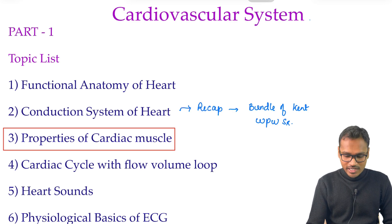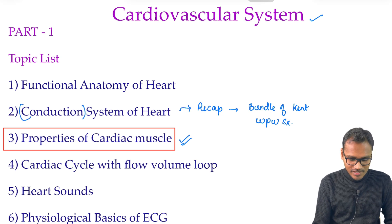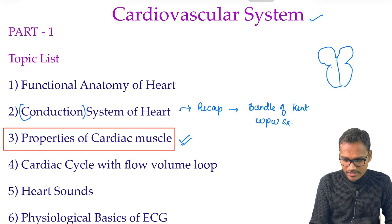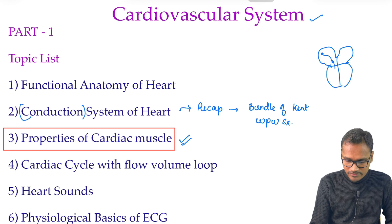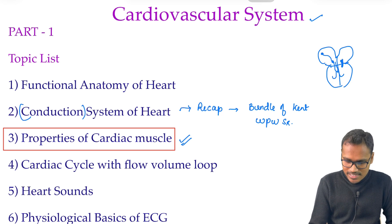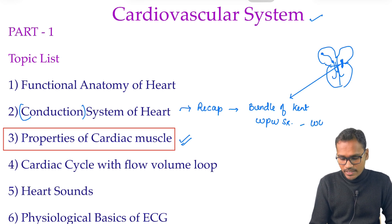Hello dear students, in this video of the cardiovascular system we are discussing the third video, which is about the properties of the cardiac muscle. In the previous video we studied the conduction system of the heart, and I asked a question: what is the conduction abnormality that can happen whenever there is an abnormal connection between the atria and ventricle? These abnormal bundles are called the bundle of Kent, and this bundle of Kent leads to a syndrome called Wolff-Parkinson-White syndrome.